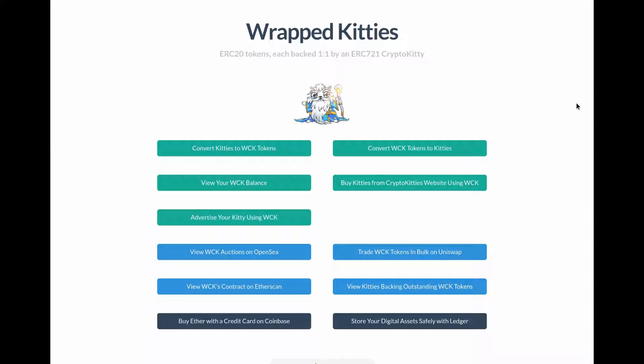Each wrapped kitty is backed one-to-one by an ERC721 CryptoKitty. These ERC standards are Ethereum standards - an ERC721 is a non-fungible token, while an ERC20 is a fungible token. A fungible token means every token is equivalent. The example often used is a dollar bill - for all intents and purposes, it's the same as every other dollar bill.